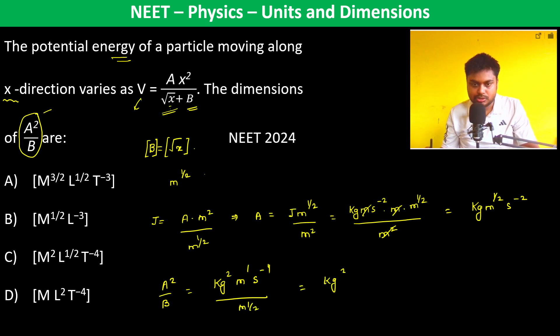Therefore, that is kg²⋅m^(1/2)⋅s^(-4). This is M²L^(1/2)T^(-4).